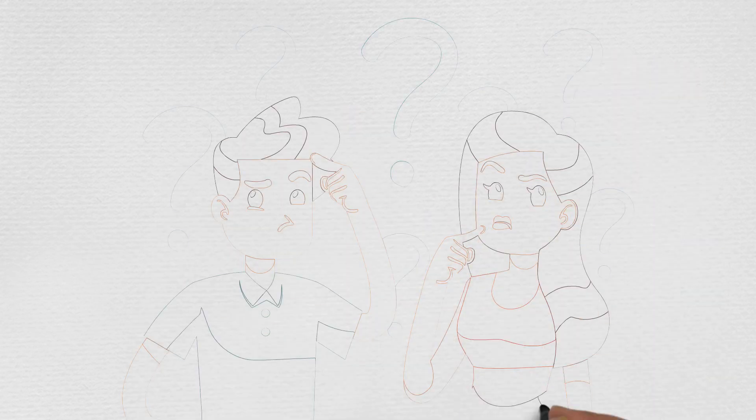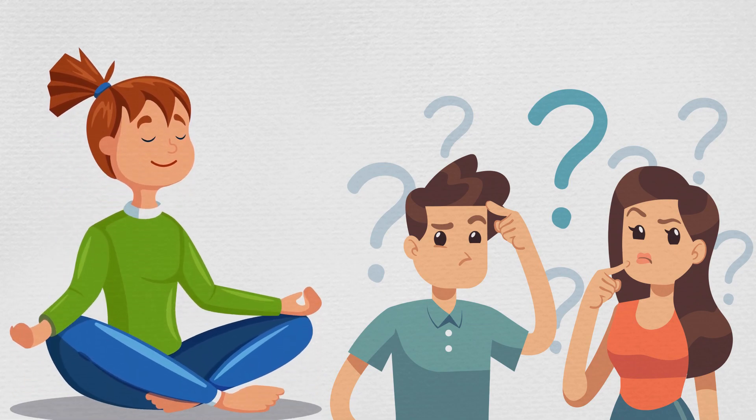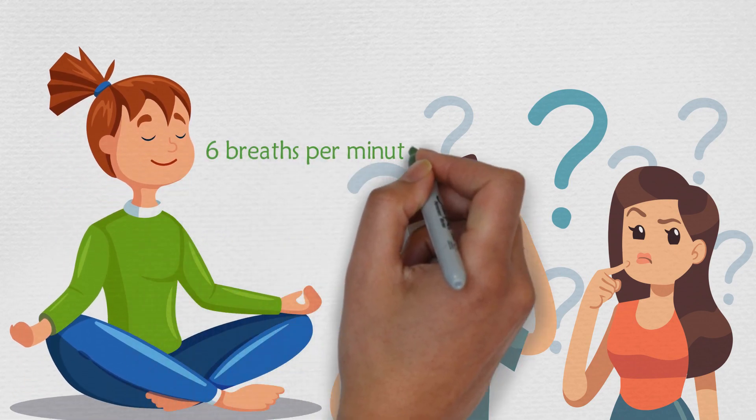How can we affect the vagus nerve? You can activate the vagus nerve by breathing at a rate of six breaths per minute.